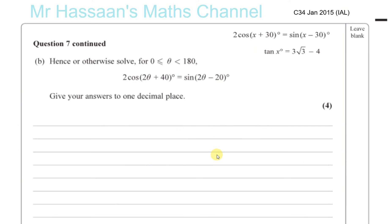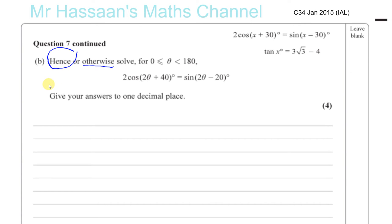Moving on to Part B. It says hence or otherwise, solve 2 cosine(2θ + 40) = sine(2θ - 20) for 0 ≤ θ < 180. We could use the otherwise method with the compound angle formula again, but because it says hence, that means using what we just did in the previous part. Whenever you see the word hence, it means use whatever method you just used — and normally the hence method is easier.